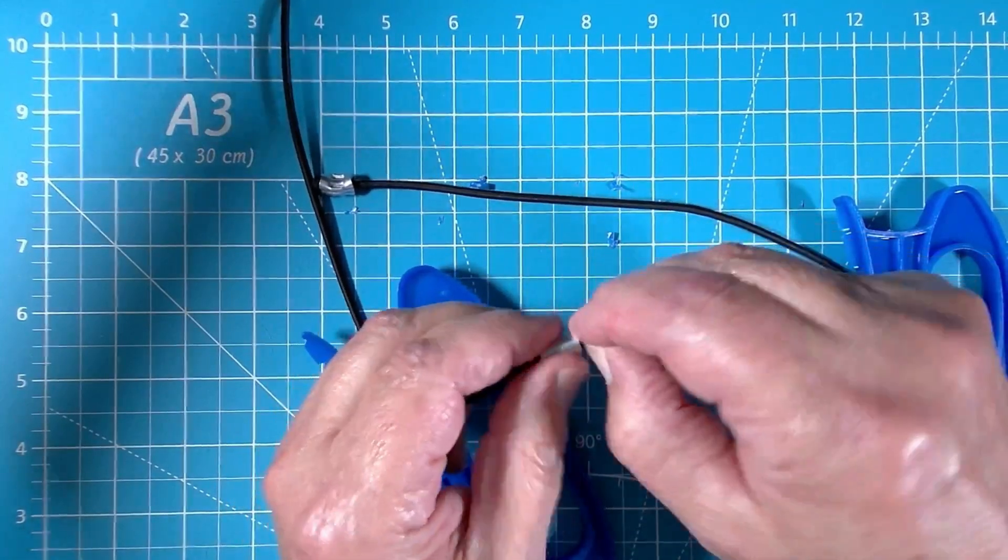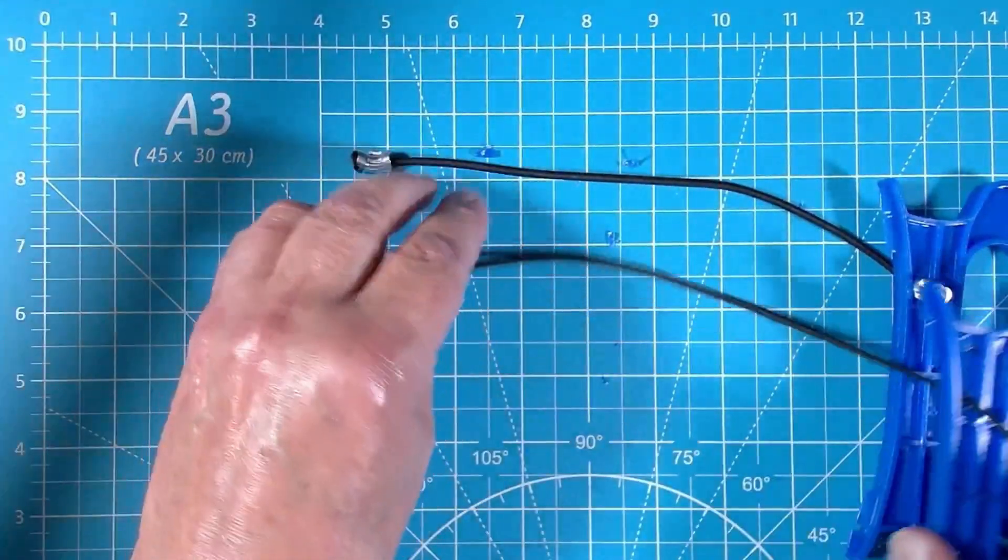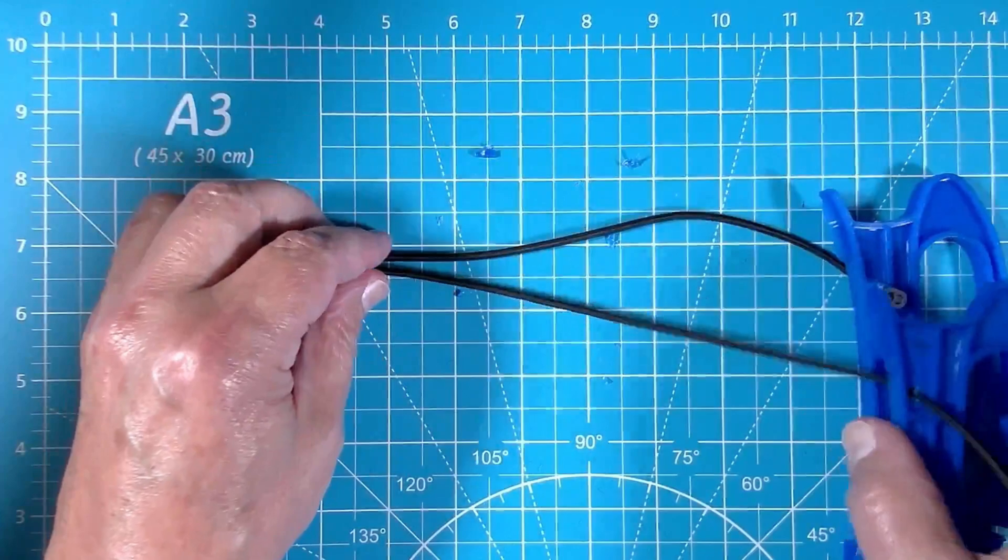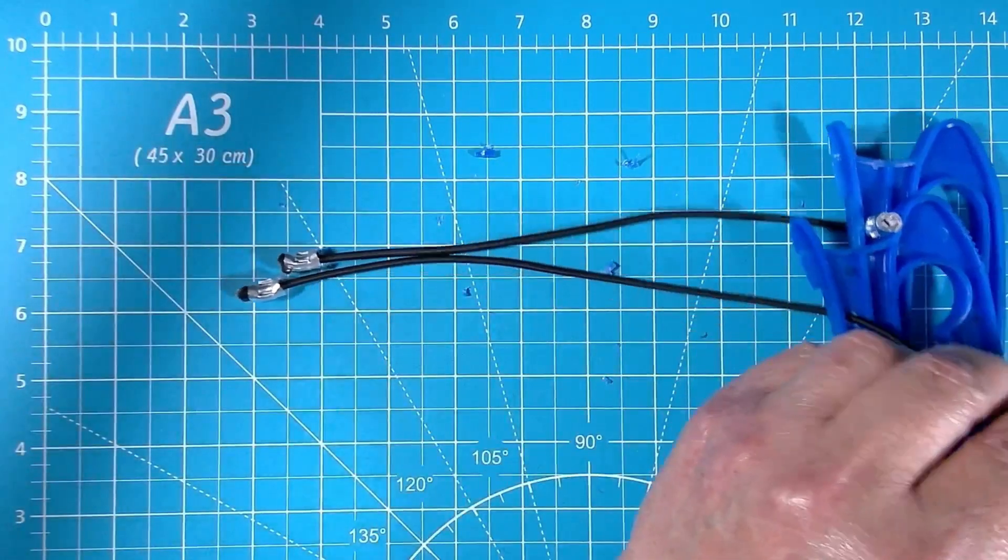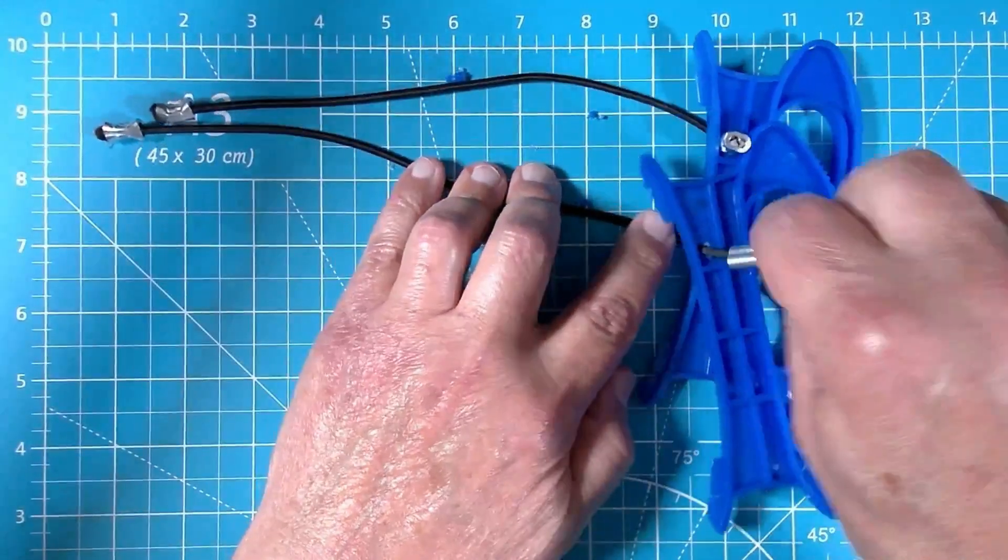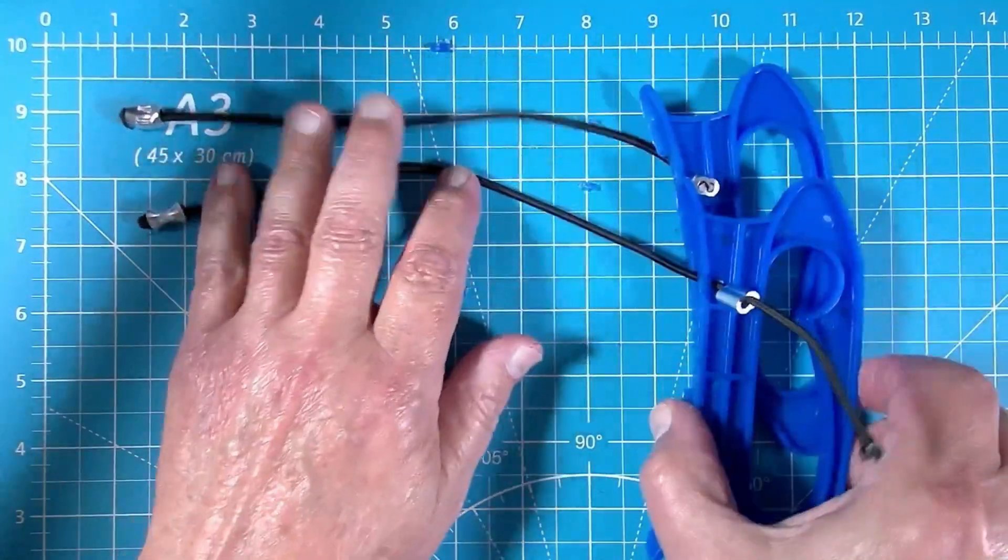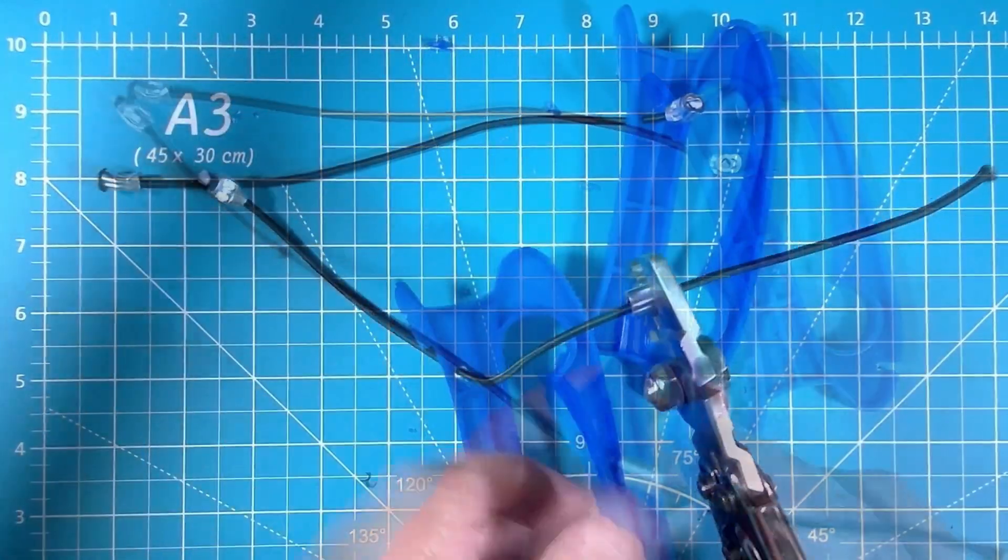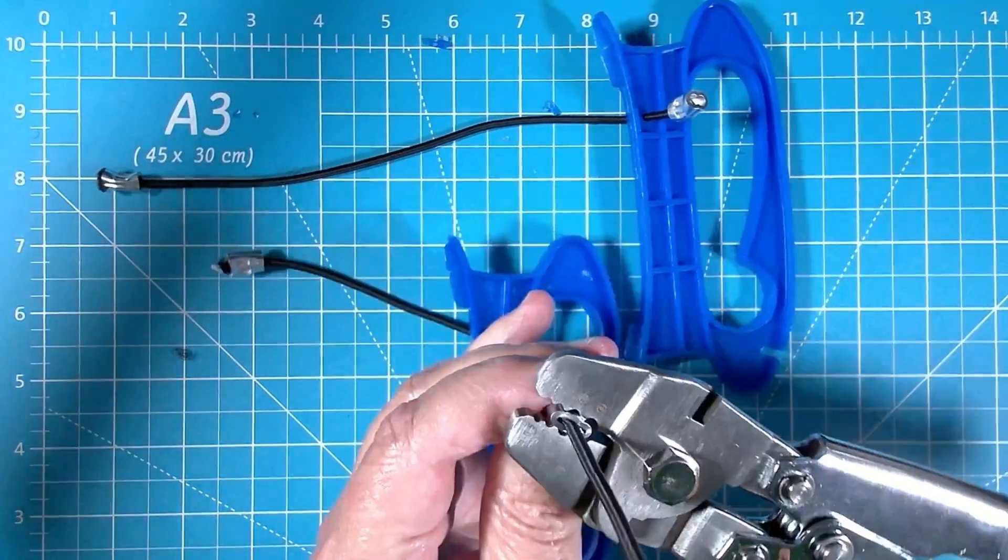All right, that's a tight fit. Let's get it the exact same length as the other one because I really like the tension that the first one that I did holds at. So it looks like right here is where we want it to be. Yeah? Close enough. Oh, my crimp moved on me. Hang on.